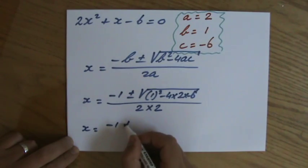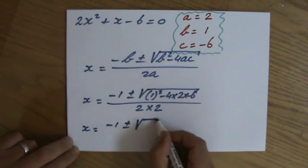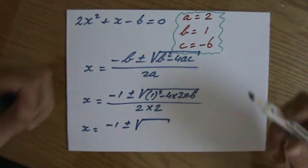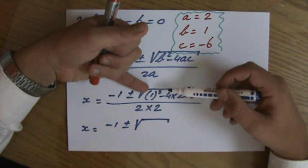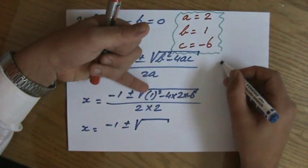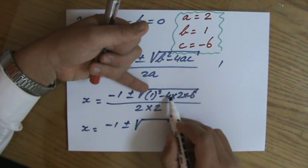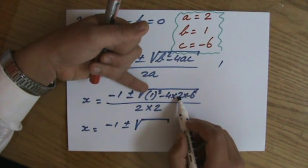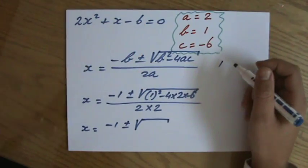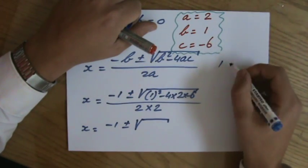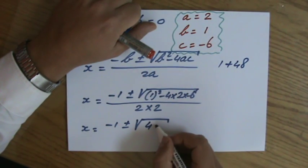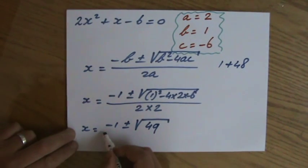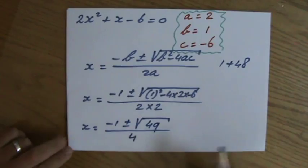Okay, minus 1 plus or minus. Now you can of course work this out on your calculator, but I don't think you have to. What is 1²? 1 times 1? That is 1. Minus 4 times 2 is -8. Times -6, that is -48. So plus 48. And 1 plus 48, that is 49. Hang on a minute, that is a square number, isn't it? Okay.